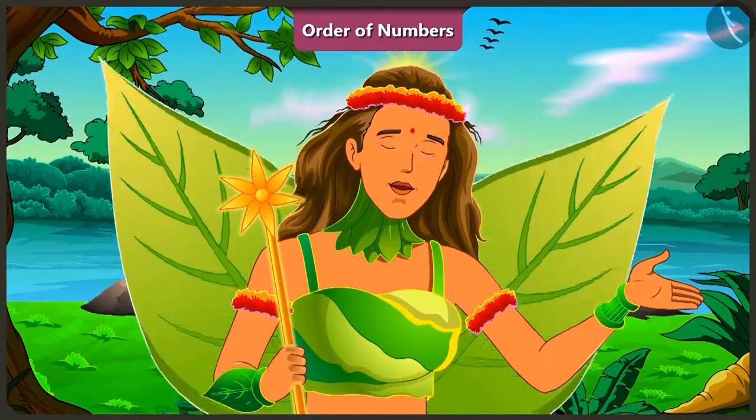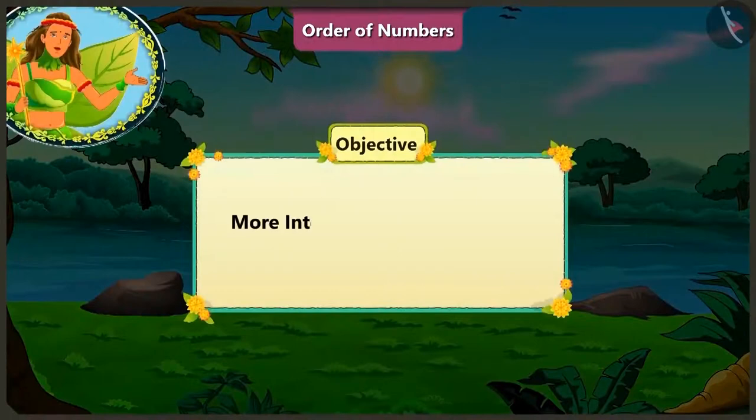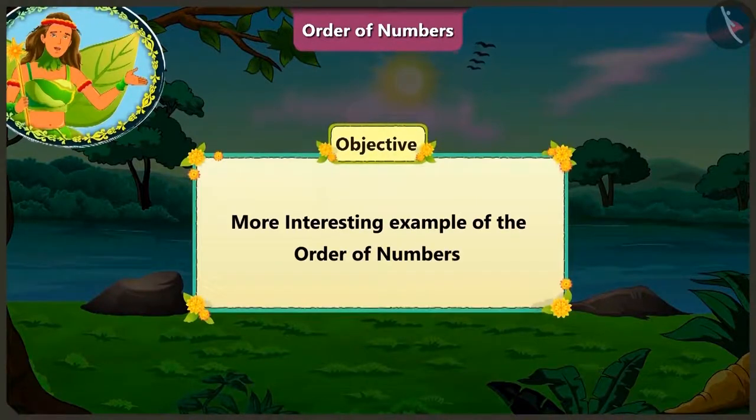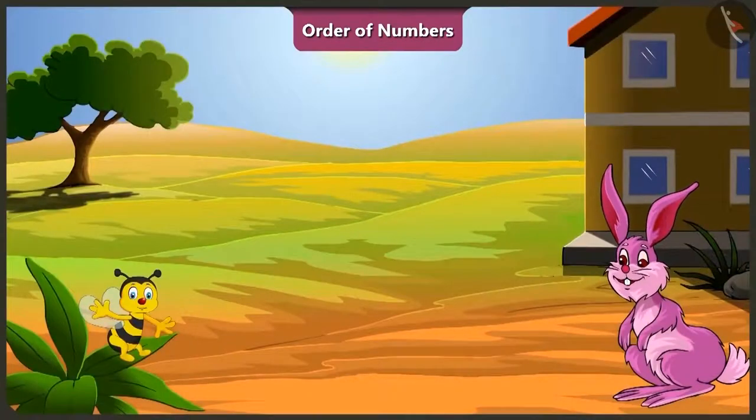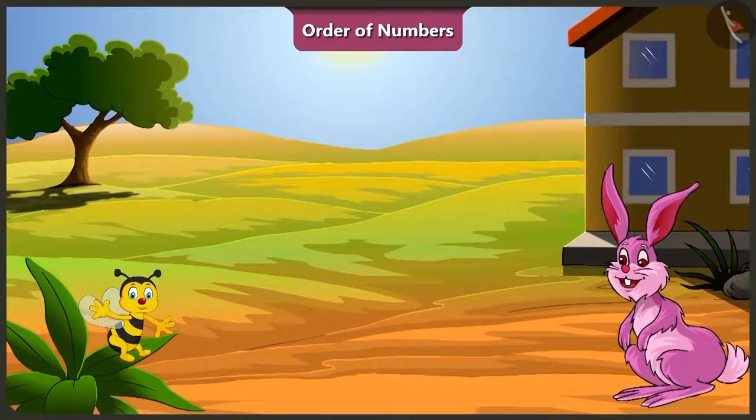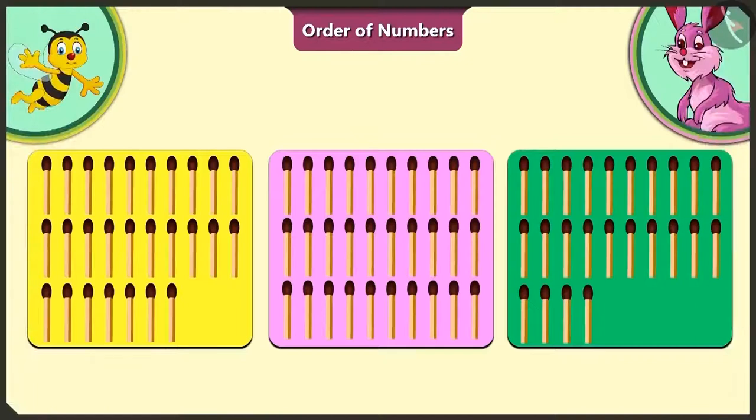Children, today let us look at some more interesting examples of the order of numbers. Okay honey, now you have understood how to find the big number and the small number of two given numbers. Now tell me, here we have three cards with matchsticks arranged on them. How will you place the cards in order according to the number of matchsticks on them?